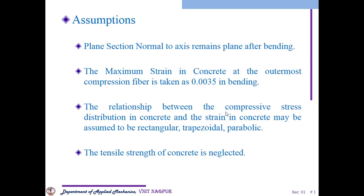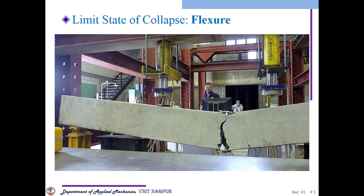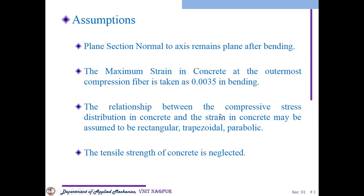Now there are some assumptions. As I told you, the plane section normal to the axis remains plane after bending — same thing happens here. The planes that are normal to the axis remain plane after breaking also. We need to take 0.0035 as the maximum strain in bending for the outermost compression fiber.